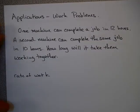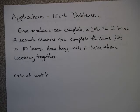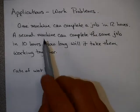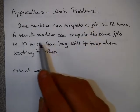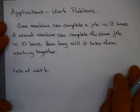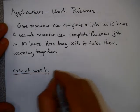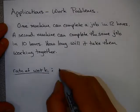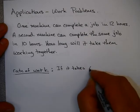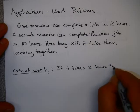Now what are some applications of these? One very common application of this is something called a work problem. And a work problem basically says you have two things, one working at a certain rate, one working at another, and how long does it take you for them to work together? Here's an example. One machine can complete a job in 12 hours. The second machine can complete the same job in 10 hours. How long will it take them working together?